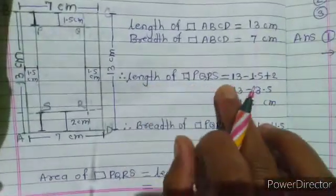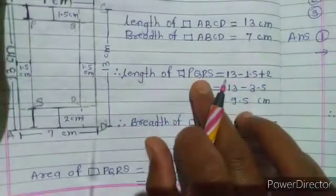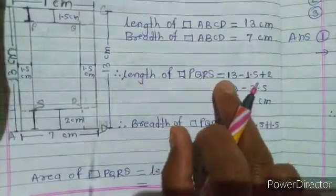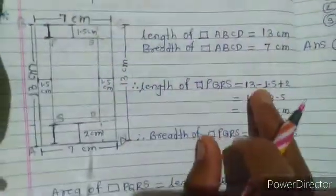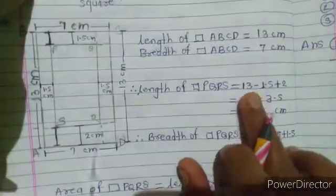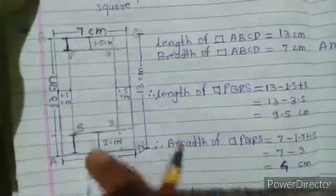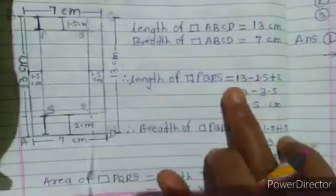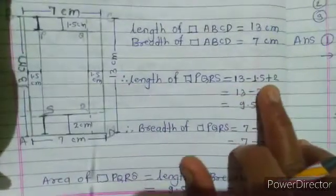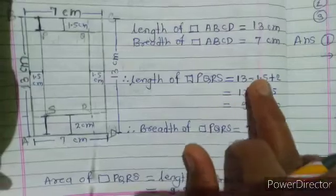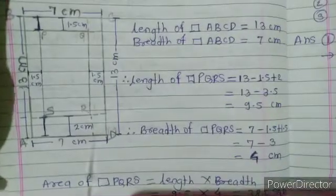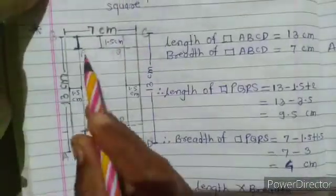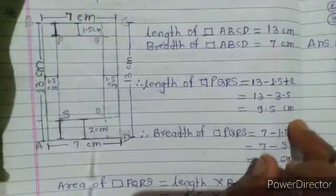Length of PQRS: PS equals AB minus the margins. That is 13 minus 1.5 plus 2 cm, which is 13 minus 3.5, and we get 9.5 cm. So the length of PQRS, or length of PS, is 9.5 cm.